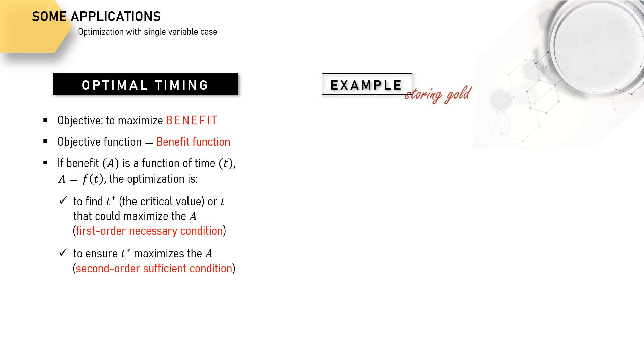Suppose that we are trying to find the optimal time for storing gold. The benefit, of course, is the value of gold when we eventually sell it. But since the sales is most likely in the future, it is best to value the gold in every possible selling time in present value. If value of gold is growing continuously following this function, where V and T are the value of gold and time in year respectively,